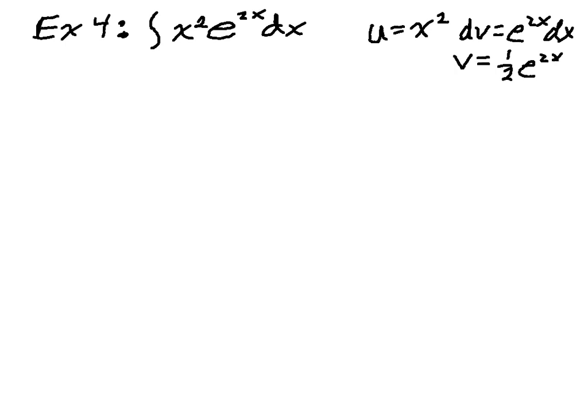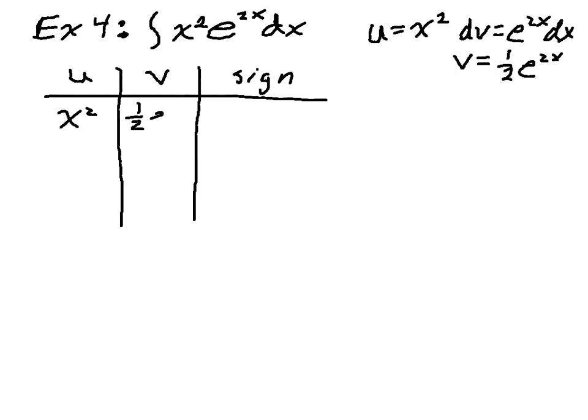So now what I'm going to do is I'm going to set up a table that has u in it, that has v in it, and then that has the sign in it. And what's really happening here is I'm putting us and v's, not just u and v. So the first one is x squared. And the first v is 1 half e to the 2x. And then the sign will be negative.